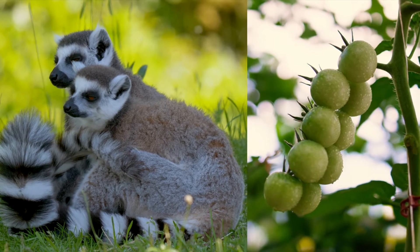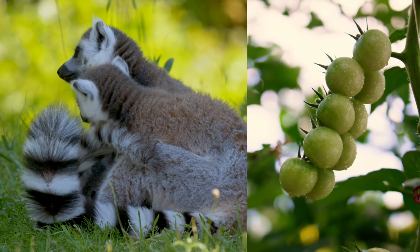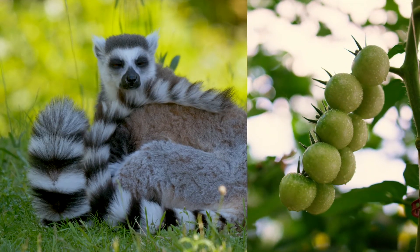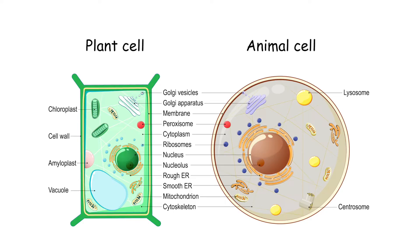Remember that despite their differences, plants and animals are both made of eukaryotic cells. Almost all of the other organelles that you learned about in the previous lesson on animal cells are present in plants as well. Plant cells have a nucleus, ribosomes, ER, Golgi, vesicles, mitochondria, cytoplasm, and a cell membrane.